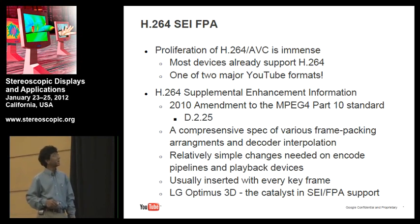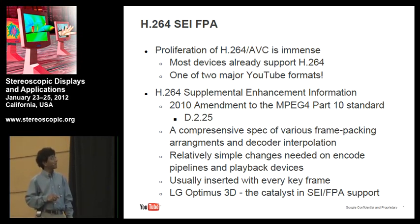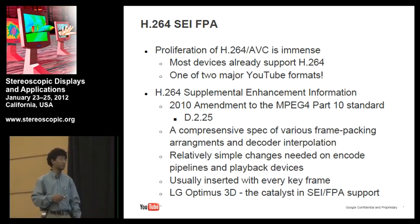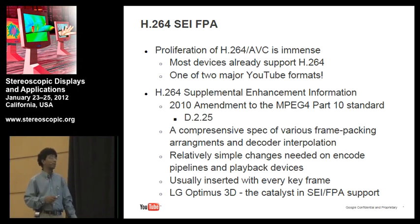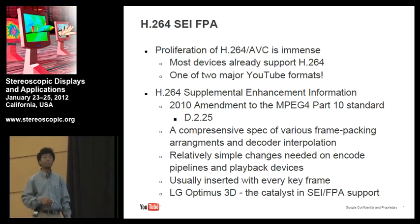H.264 SEI FPA: SEI stands for Supplemental Enhancement Information, which is a framework in H.264 to provide supplemental information about the elementary stream. The proliferation of H.264 AVC is obviously immense, and it's also one of the two major YouTube formats for all our video outputs. The H.264 amendment MPEG-4 Part 10, D.2.25, is basically a comprehensive specification of what we just talked about in the last slides — it covers all different ways you can pack frames from 3D content into a monoscopic video. The changes needed are relatively minor. You need to provide SEI FPA information, which is typically inserted with every keyframe, so you can start decoding midstream and play back 3D.